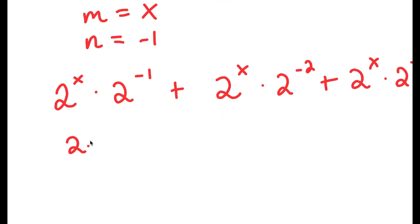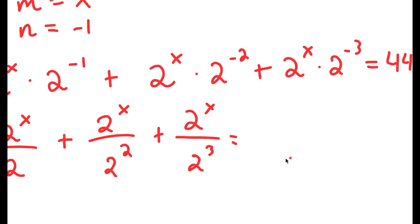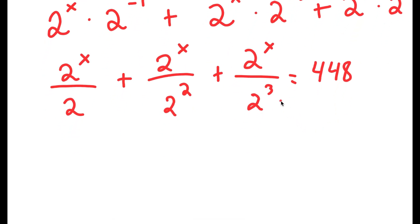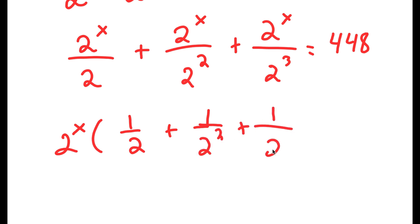Now 2 to the power of negative 1 is 1 over 2, so I get 2 to the power of x over 2, plus 2 to the power of x over 2 squared, plus 2 to the power of x over 2 to the power of 3, equals 448. Factoring out 2 to the power of x gives 2 to the power of x times 1 over 2 plus 1 over 2 squared plus 1 over 2 to the power of 3 equals 448.